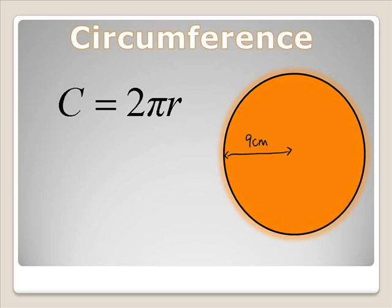So say the radius is 9cm. The circumference would equal 2 times pi times 9, which equals 2 times 3.14 times 9, which when you calculate it is 56.55cm.